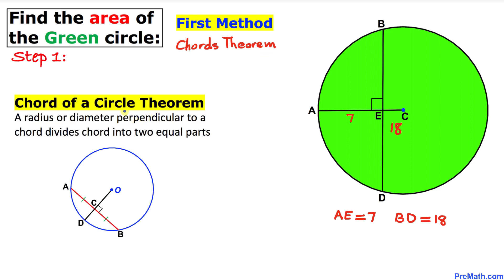Let's recall the chord of a circle theorem: a radius perpendicular to a chord divides the chord into two equal parts. Since this radius is perpendicular to this chord, line segment BE equals line segment ED. Since the total length is 18, each half is 9.